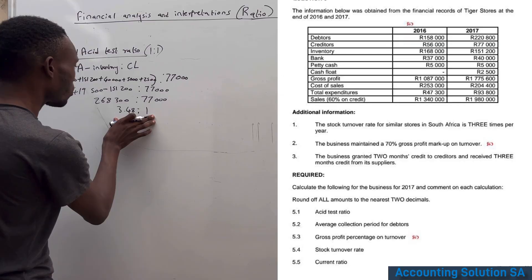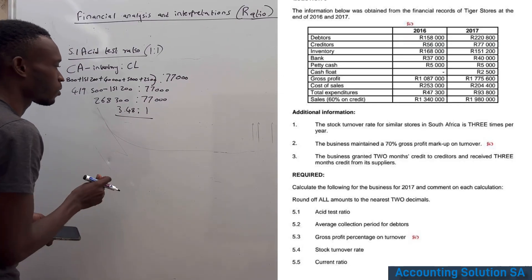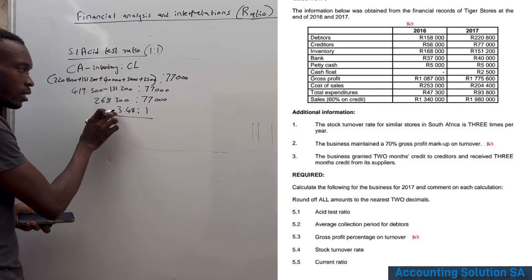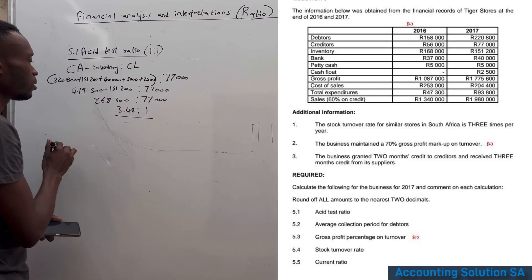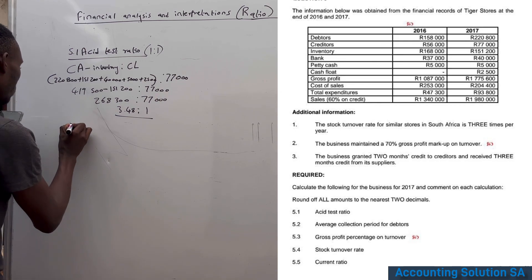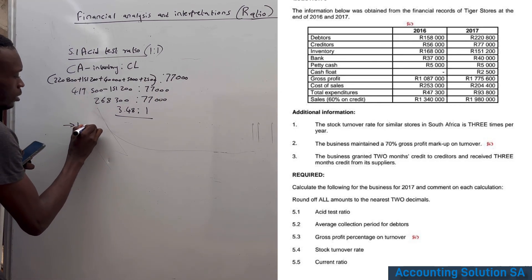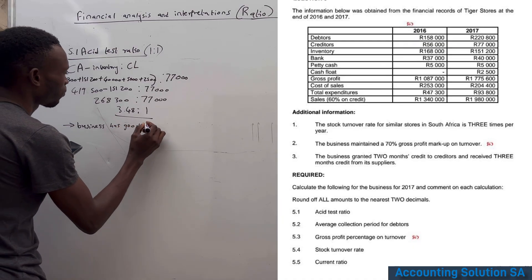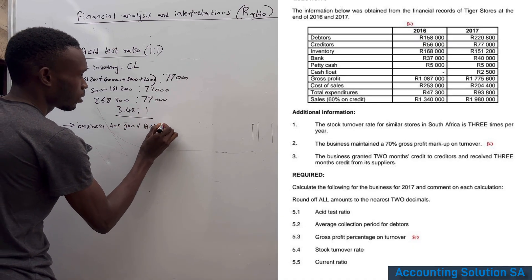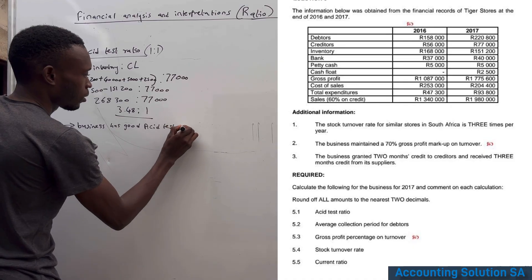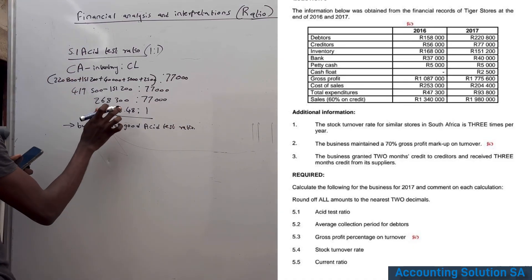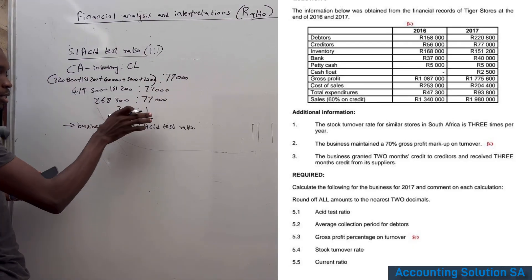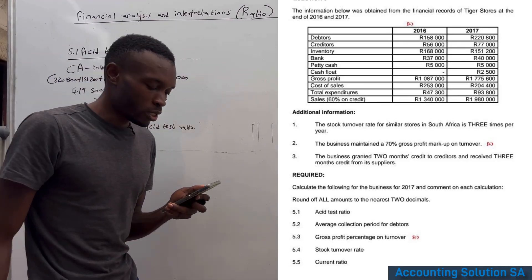This result is very good — our assets are greater than liabilities by 3.48 times. Since the norm is 1:1 and our result is 3.48, the business is in a strong position to meet its short-term obligations.